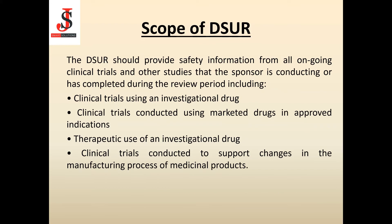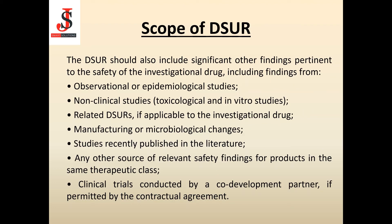The DSUR should provide safety information from all ongoing and completed clinical trials during the review period, including trials using an investigational drug, trials using marketed drugs in approved indications, therapeutic use of an investigational drug, and trials supporting changes in the manufacturing process. It should also include significant findings from observational or epidemiological studies, non-clinical studies such as toxicological and in vitro studies, related DSURs, manufacturing or microbiological changes, recently published literature, other relevant safety findings from the same therapeutic class, and clinical trials conducted by a co-development partner if permitted by contractual agreement.